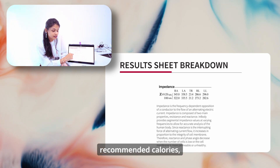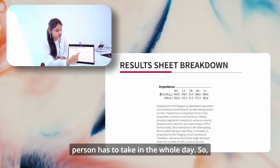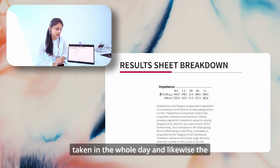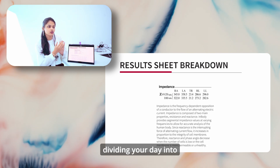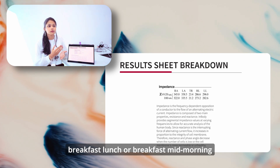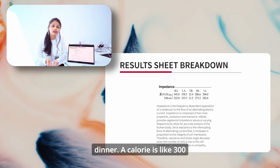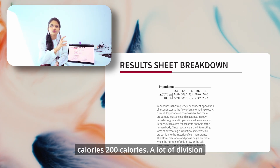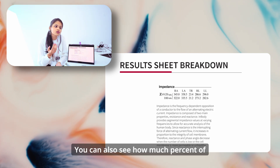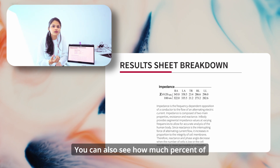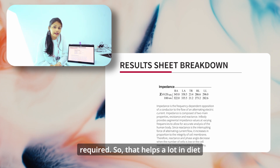The recommended calories indicate the calorie intake the person should take throughout the day. For example, 2000 calories can be taken in the whole day, and the diet can be monitored accordingly. You can divide the day into breakfast, mid-morning, lunch, mid-evening, and dinner — with divisions like 300 calories or 200 calories per meal. You can also see what percentage of carbohydrates and proteins are required, which helps a lot in diet planning.